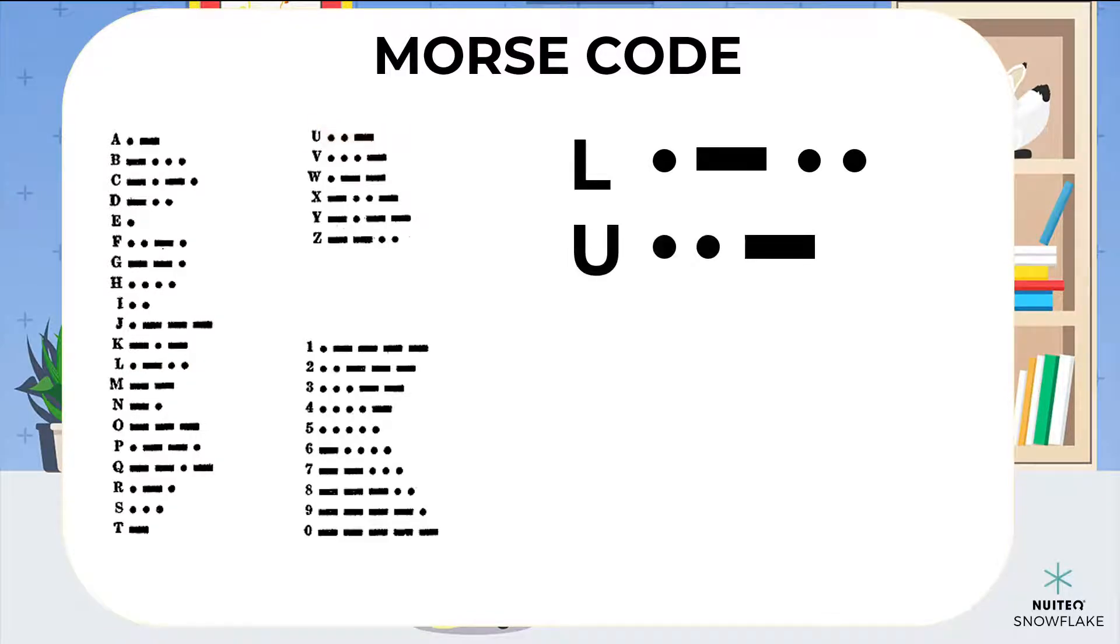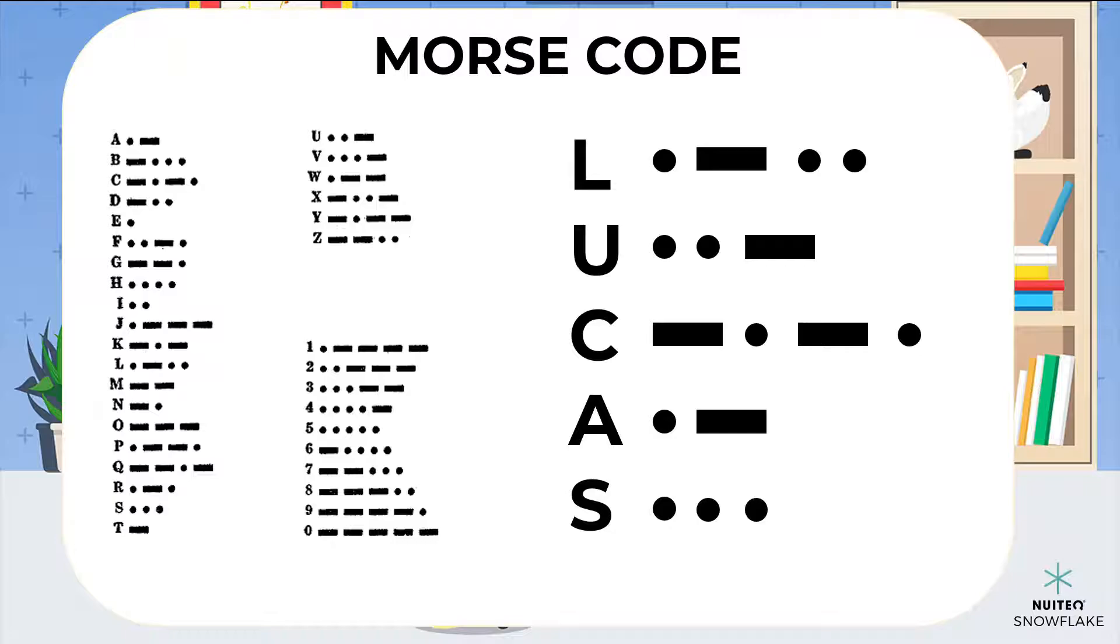U would be two short ones, followed by a long one. C would be one long signal, followed by one short one, then another long one, and a short one. A would be one short signal, followed by a long one. And S would be three short signals. Like this.